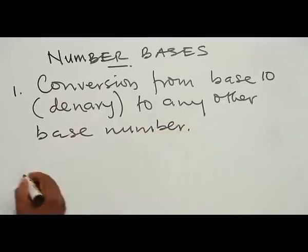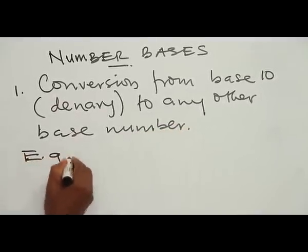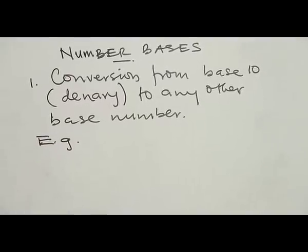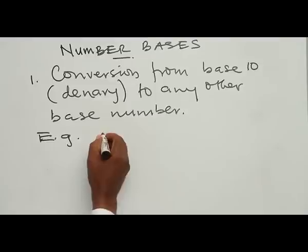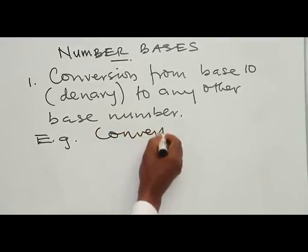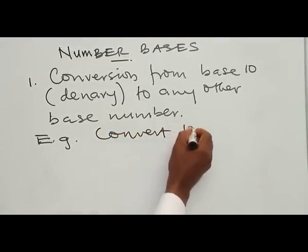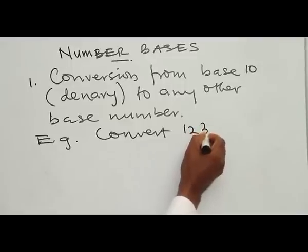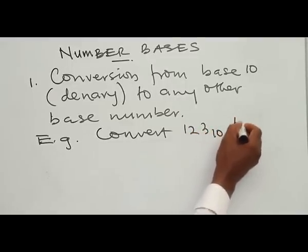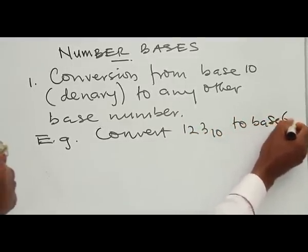We take an example. Convert the number 123 in base 10 to base 6. Remember base 10 is the denary, and base 6 is also called the hexabase.